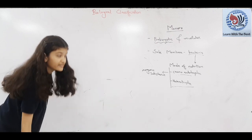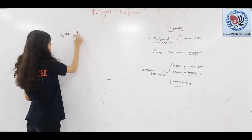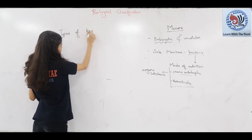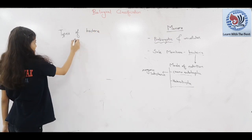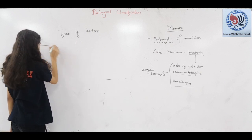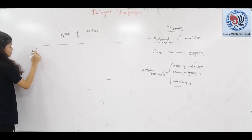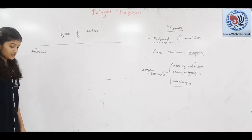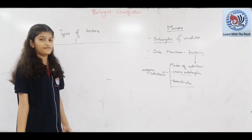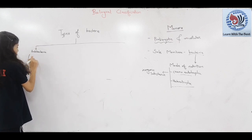Now we will talk about the types of bacteria. Bacteria are classified into three parts. First is Archaebacteria. Archaebacteria have a different cell wall structure from other bacteria, which is the cause of their survival in extreme conditions.